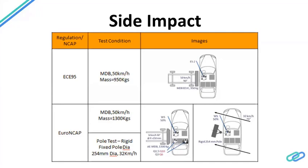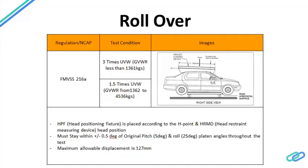The pole test uses a rigid pole of 254 mm diameter impacting the vehicle at 32 km/h at an angle of 75 degrees. This replicates a real-world scenario where a driver braking hard on a wet or snowy road causes the vehicle to aquaplane and skid into a lamppost or street pole. The 75-degree angle is calculated in accordance with the driver's position to ensure the worst-case scenario is tested.